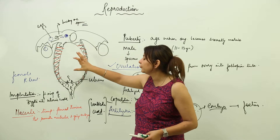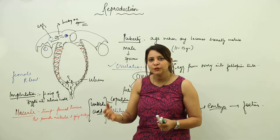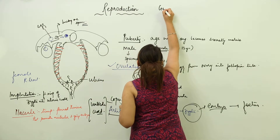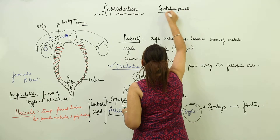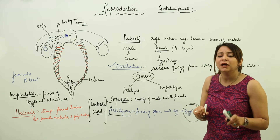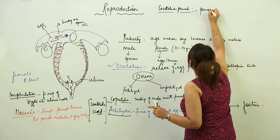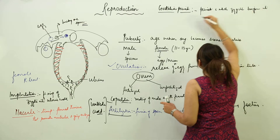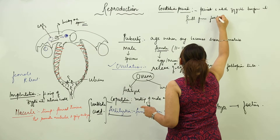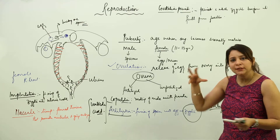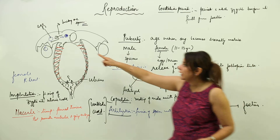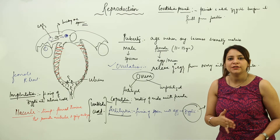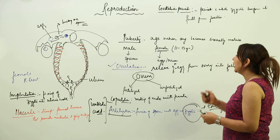The embryo remains in the uterus for a certain period during which it transforms into a fully grown baby — all organs develop. This is called the gestation period. In humans, the gestation period is nine months. It is the period in which the zygote transforms into a fully grown fetus, ready to be delivered. Gestation period varies from species to species.